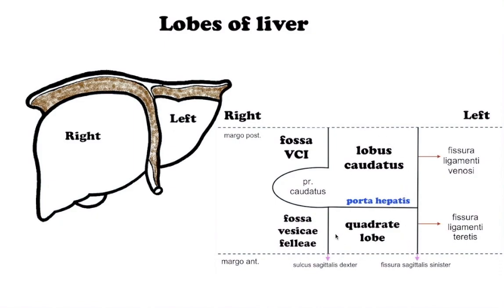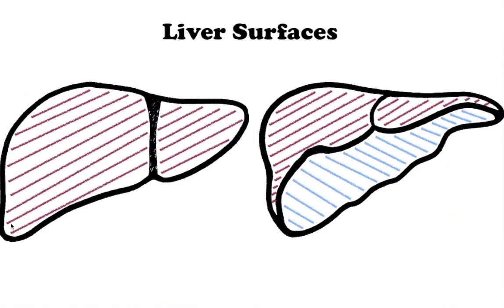The right lobe is larger than the left lobe. The liver has two surfaces: diaphragmatic surface and visceral surface. The liver has two margins: anterior and posterior.